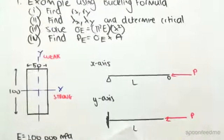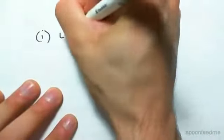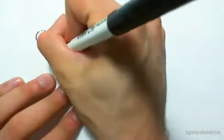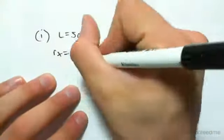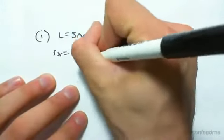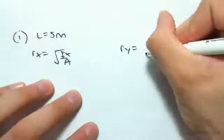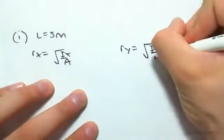So the first thing we need to find is rx and ry. We're going to be for l equaling 5 meters. So we need to find rx. rx is going to be the square root of ix on a and ry is equal to the square root of iy on a.